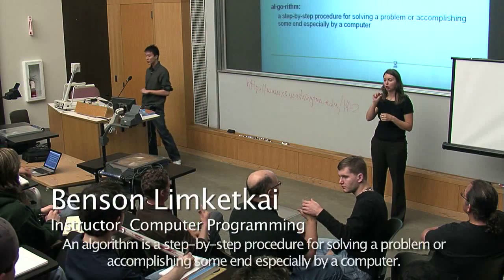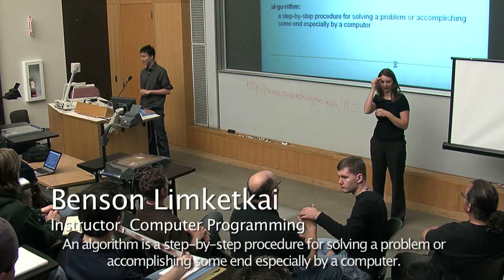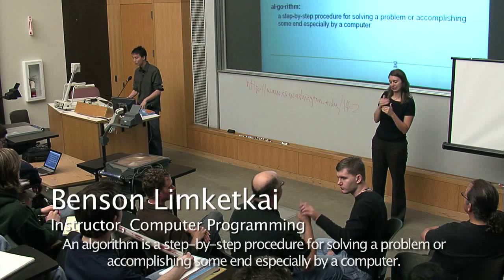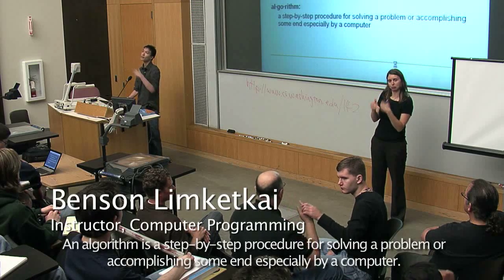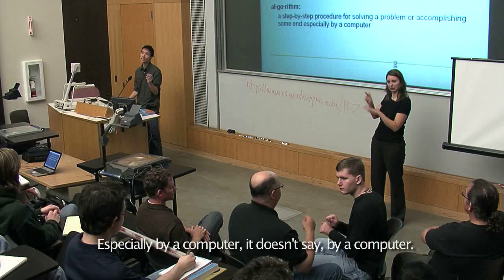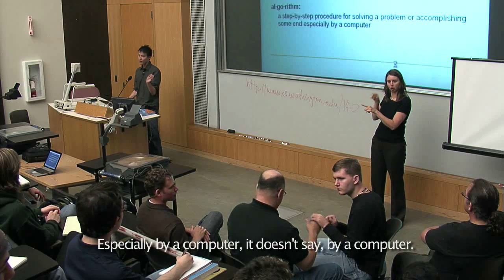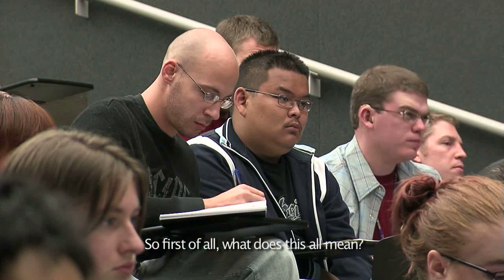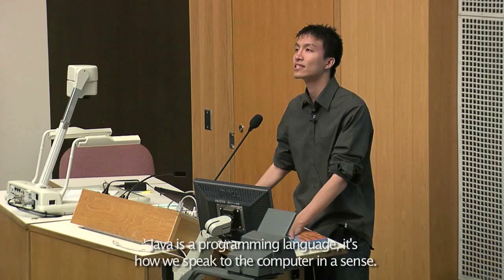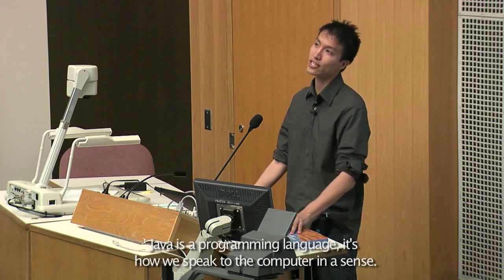An algorithm is a step-by-step procedure for solving a problem or accomplishing some end, especially by a computer. It doesn't say only by a computer. So, first of all, what is Java? Java is a programming language — it's how we speak to the computer, in a sense.